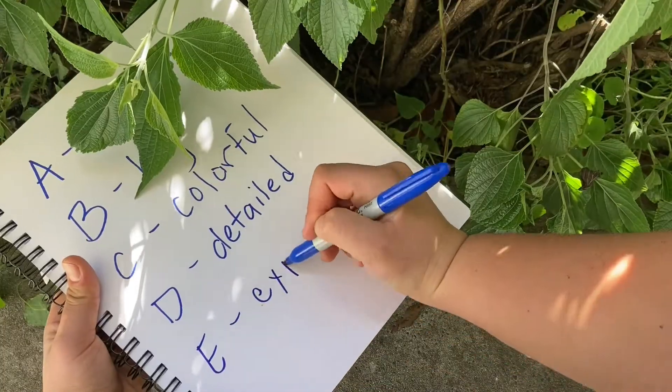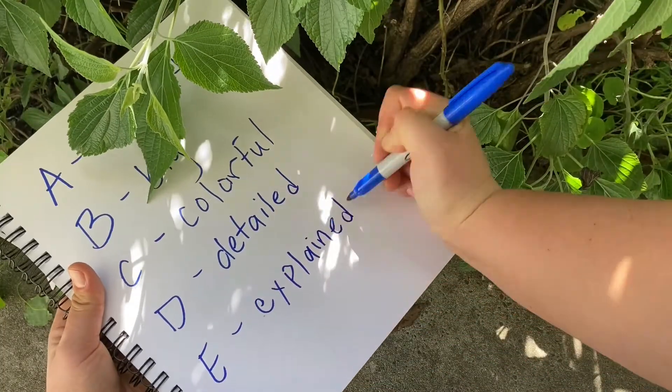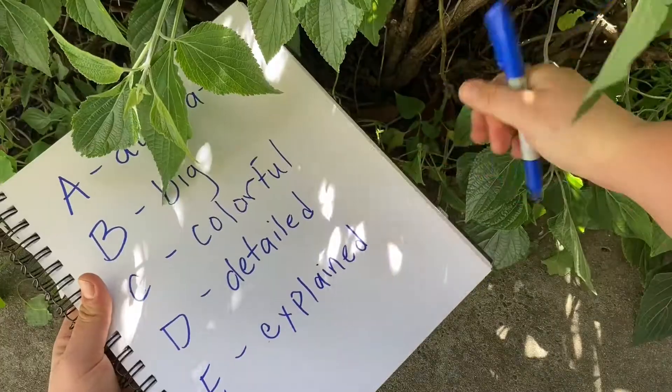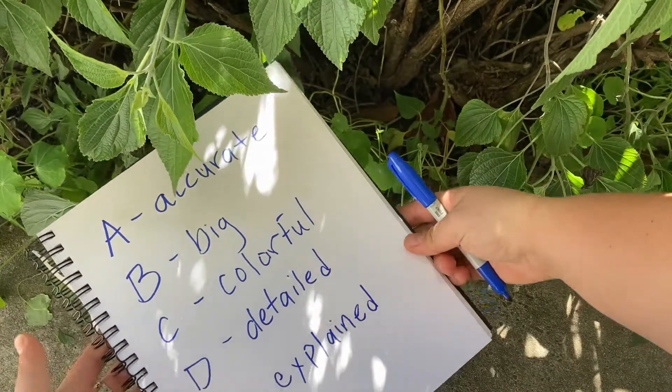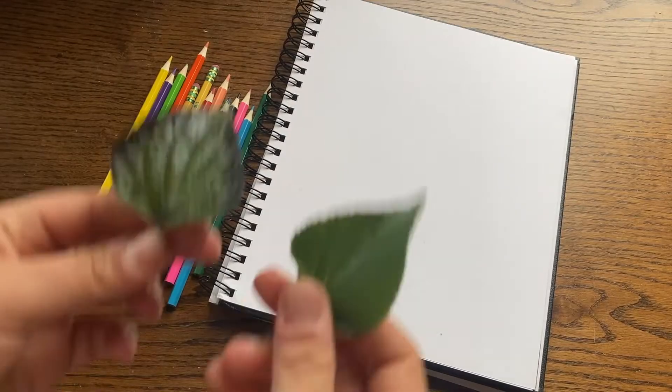E stands for explained. You might want to add words to help describe what we're looking at, or add labels. So when you're thinking about drawing something scientific, remember your A, B, C, D, E's. Now we are going to start our scientific sketches.